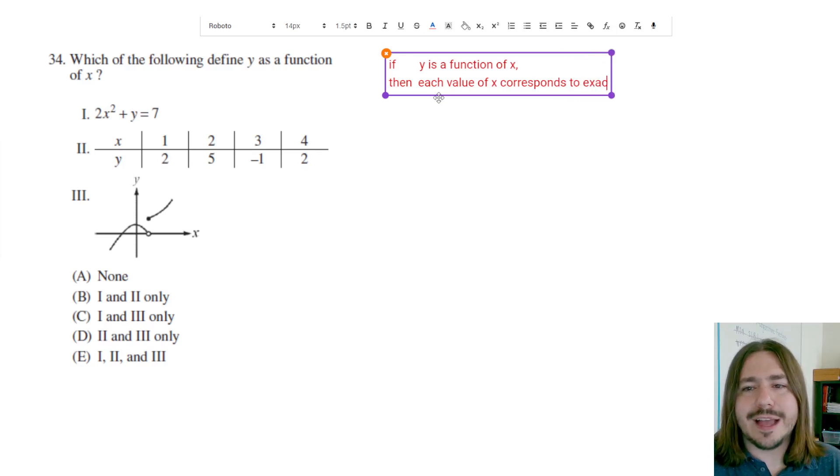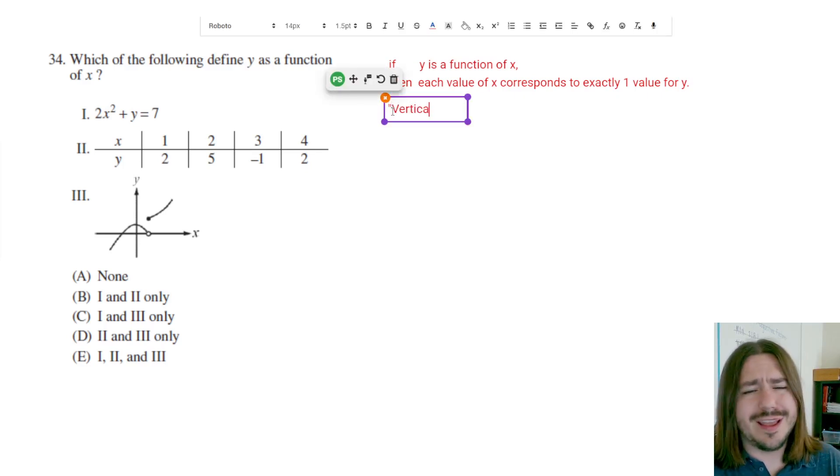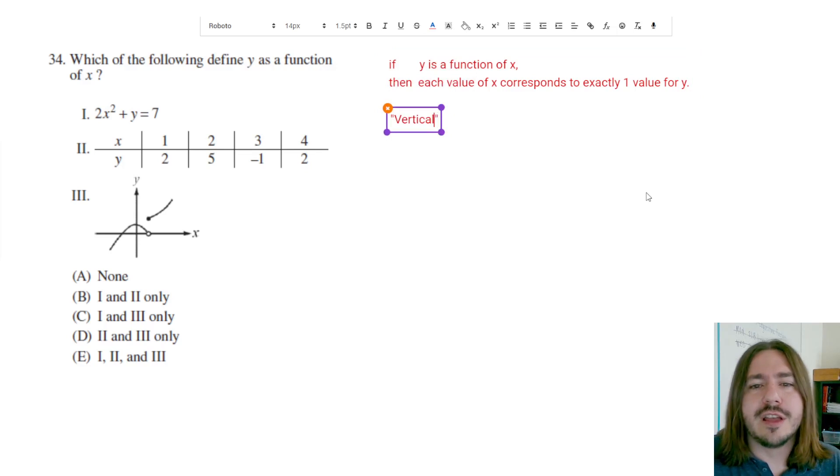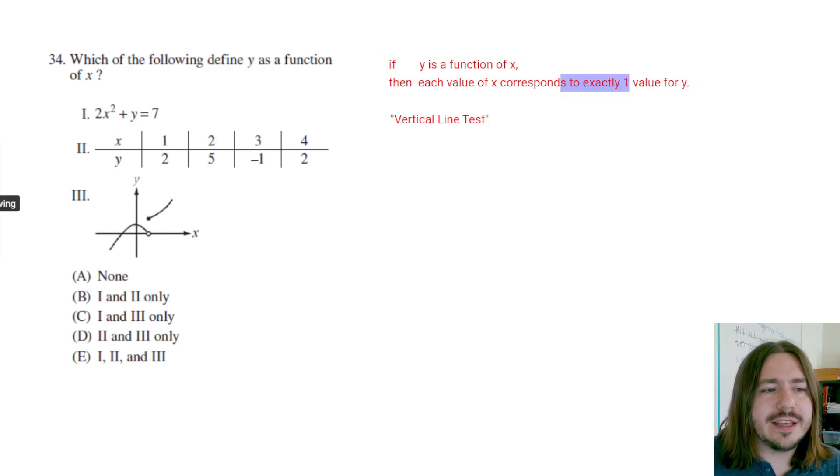Visually, we can test for this using something called the vertical line test. The graphs are going to be the easiest one to test for this, to see if y is a function of x. The vertical line test says that for each x value, you're testing to see is there only one y value that corresponds to that. So the idea is these vertical lines that you could draw on the graph. If you cross the graph more than once, then it's not a function.